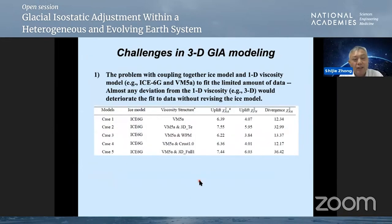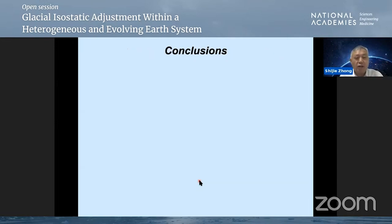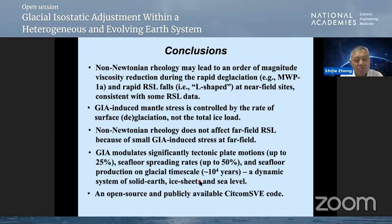One major challenge is that the ice model and 1D viscosity model are coupled — they're fit to data together. This means anytime you introduce 3D structure deviating from 1D viscosity, you reduce the fit to data unless you also revise the ice model. This is a big challenge, likely already discussed by previous speakers. A community benchmark effort is also important. That is all — I apologize for going a bit over time.